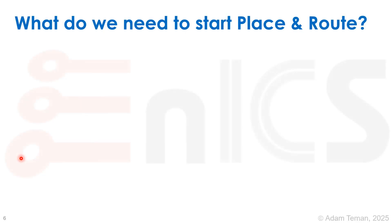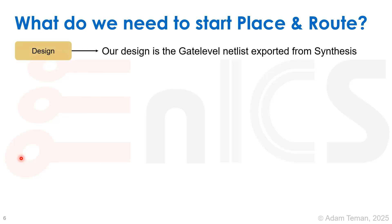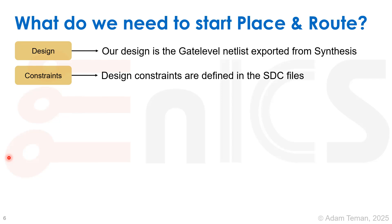What do we need to start place and route? First, we need the design, which is the gate-level netlist exported from synthesis. Second, we need constraints — the design constraints defined in SDC files. We're going to use the same design constraints throughout the whole flow. We may use a variable like 'run type' to differentiate SDC commands during synthesis versus place and route, but I like to use the same file so important changes stay consistent throughout the flow.